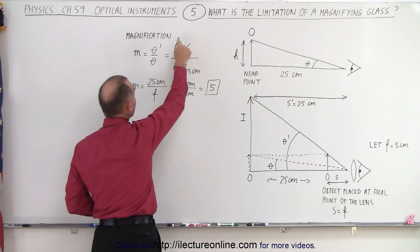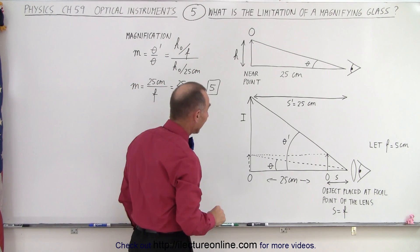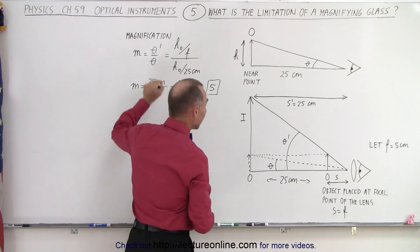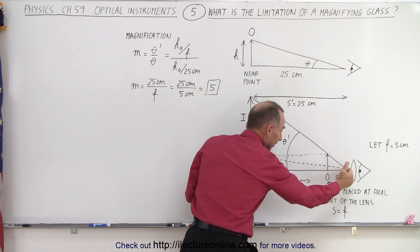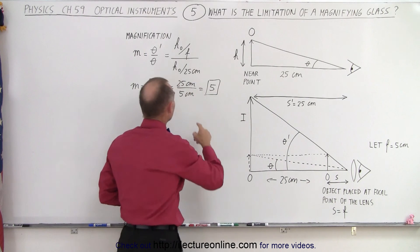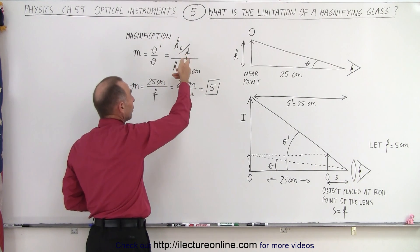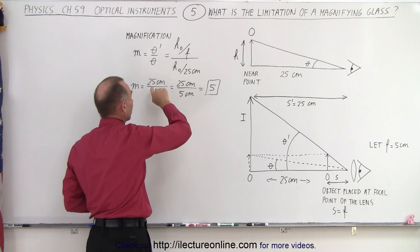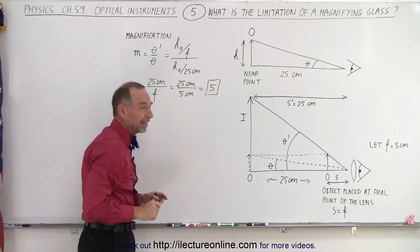So theta prime is going to be the height of the object divided by the focal length of the lens. And then theta is going to be the ratio of the height of the object divided by 25 centimeters. The height of the object cancels. We then multiply by the inverse, and we end up with the magnification being 25 centimeters divided by the focal length of the lens.